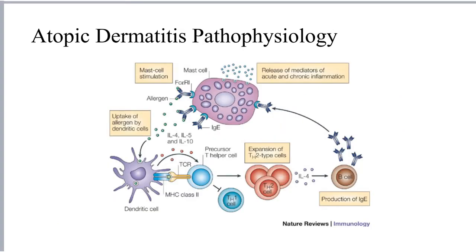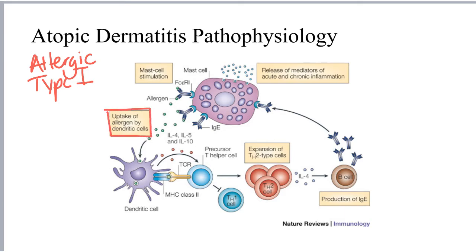Atopic dermatitis is essentially an allergic reaction that occurs in the upper layers of the skin. This is also known as a type 1 hypersensitivity reaction. The initial insult is the uptake of an allergen into the upper layers of the skin and the processing of that allergen by dendritic cells. The reason that allergens are able to penetrate the skin is due to some form of decreased skin barrier function, though it is not clear how this initial step occurs.